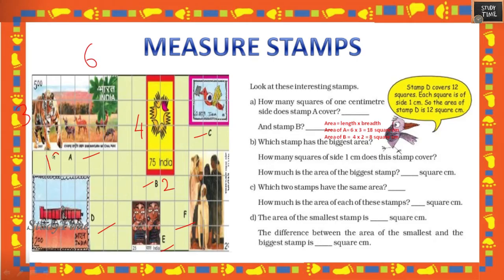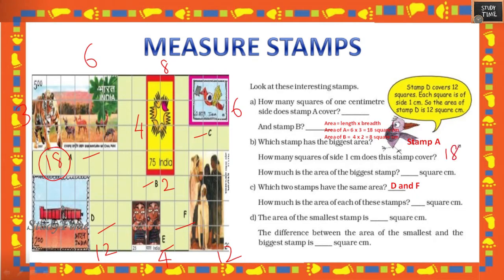Which stamp has the biggest area? Stamp A = 18, B = 8, C = 6, D = 6, E = 12, F = 4 — wait, reviewing: A = 18, the biggest. How many squares of side one centimeter does stamp A cover? It is 18 square centimeters.